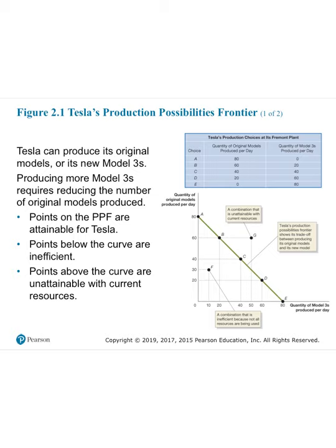In the table, there are different choices — A, B, C, D, and E — each with a different combination of original models and Model 3s produced per day. In choice A, Tesla produces 80 original models per day and zero Model 3s, devoting all resources to the originals. At the other extreme, choice E has no original models, and devoting all resources to Model 3s also yields 80 of them.